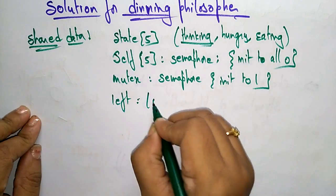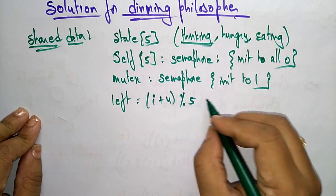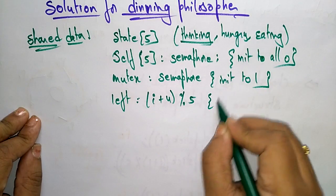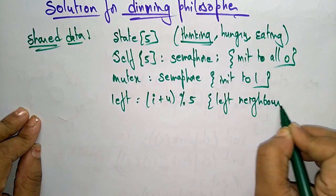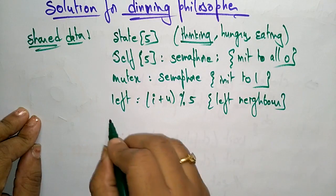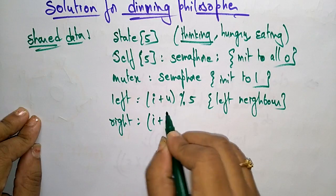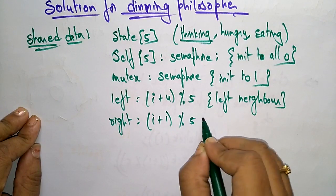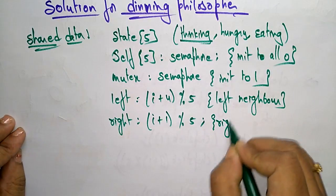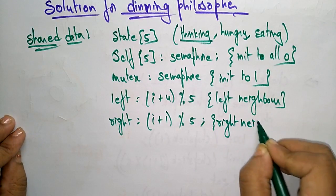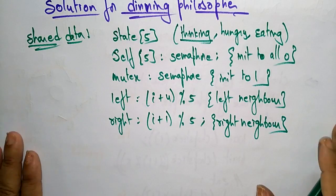I am defining left and right neighbors. The left chopstick is: LEFT = (i + 4) mod 5 — this indicates the left neighbor. The right neighbor is: RIGHT = (i + 1) mod 5 — this indicates the right neighbor. These are the conditions I am setting before proceeding with the algorithm.